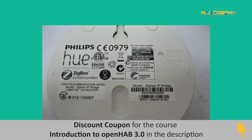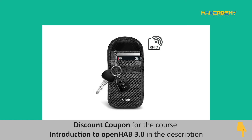Another example would be automatically turning on lights like Philips Hue products, which use the ZigBee protocol, when you enter your home. This can be achieved by using RFID tags on your car key chain integrated into the home automation platform.